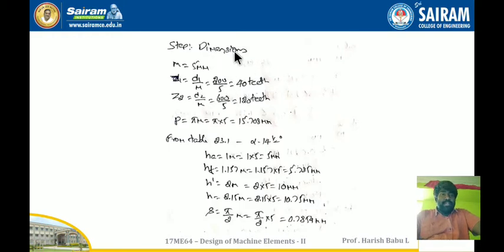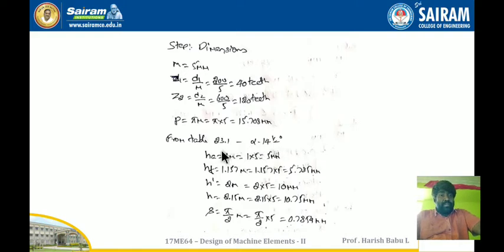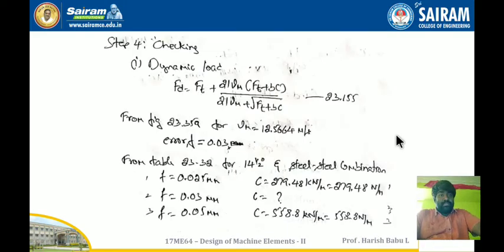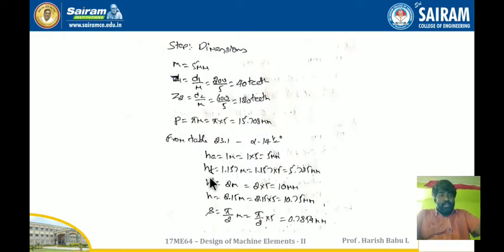For design dimensions: Z1 = D1/M = 200/5 = 40 teeth; Z2 = D2/M = 600/5 = 120 teeth. Circular pitch P = π × M = 15.708 mm. From table 23.1 for 14.5° pressure angle: addendum = 1M = 5 mm; dedendum = 1.157M = 5.785 mm; working depth = 2M = 10 mm; whole depth = 2.157M = 10.785 mm; tooth thickness = (π/2) × M = 7.854 mm.